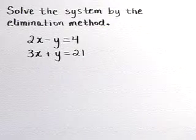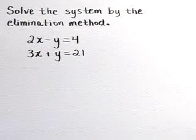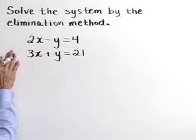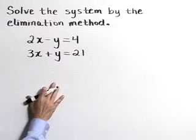Solve the system by the elimination method. Here we have this system: 2x minus y is equal to 4 and 3x plus y is equal to 21.